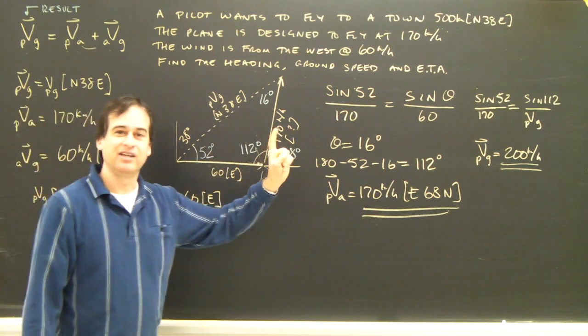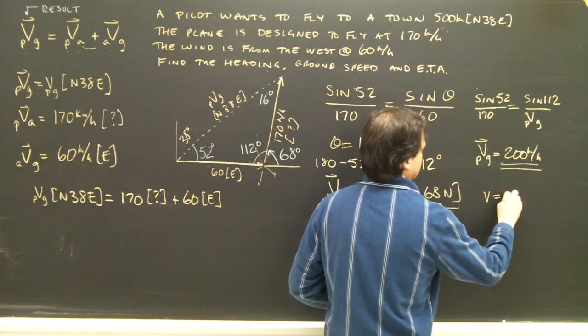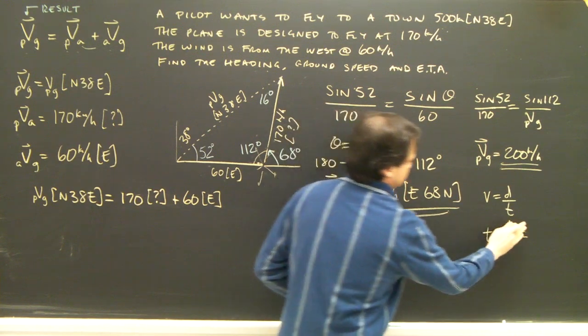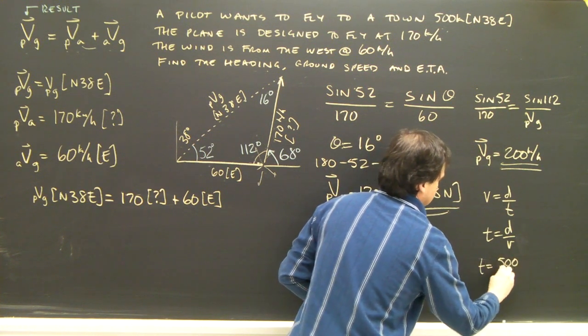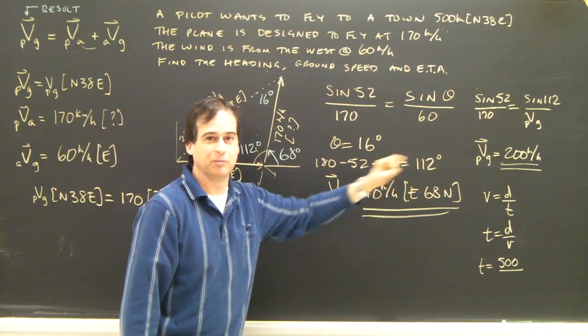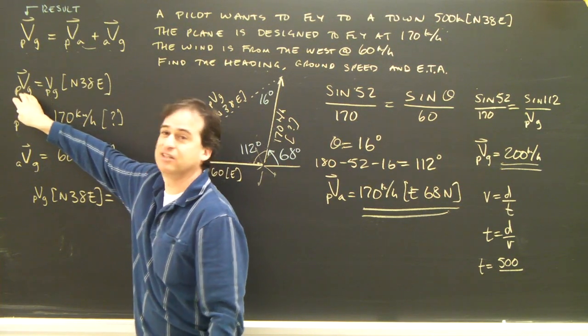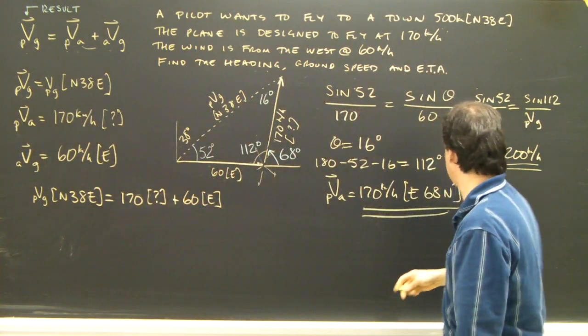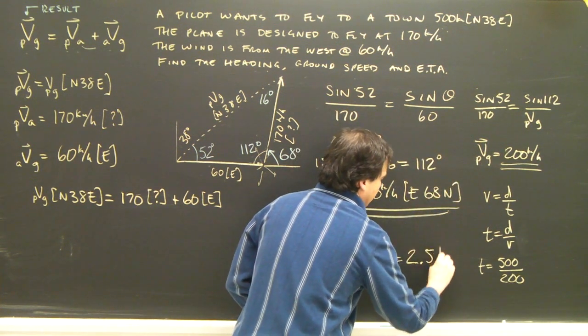The last thing I've got to do is figure out the ETA, the estimated time of arrival. How long is this trip going to take? Well, we know that V equals D over T, so T equals D over V. So what is the distance we traveled? 500 kilometers. And how fast were we going? Well, do we use the 60, the 170, or the 200 kilometers per hour? Well, we're traveling to a town that's 500 kilometers away. This is the actual velocity the plane is flying over the ground. So that's the one. The actual velocity, the result, goes with the resultant displacement. So I'm going to put the 200 here. So the time is equal to 2.5 hours.